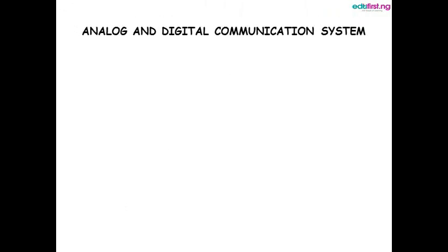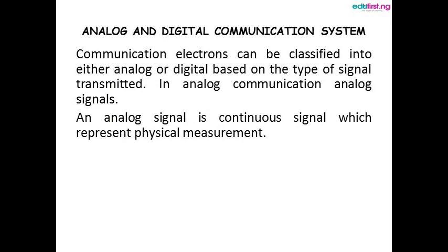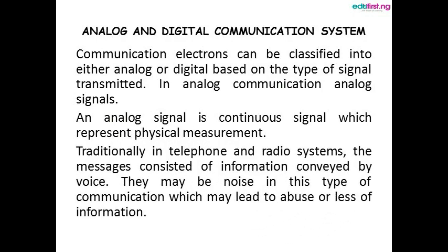Analog and digital communication systems: communication systems can be classified as either analog or digital based on the type of signal transmitted. In analog communication, analog signals are transmitted. An analog signal is a continuous signal which represents physical measurement. Traditionally, in telephone and radio systems, messages consisted of information conveyed by voice.